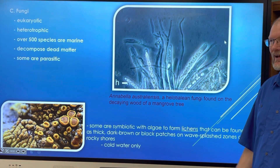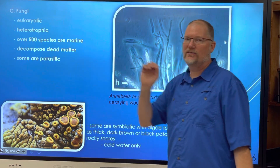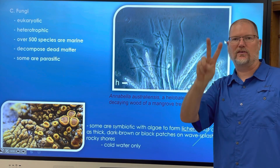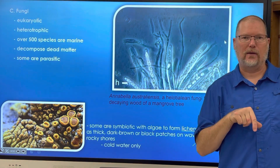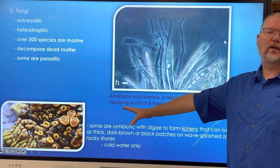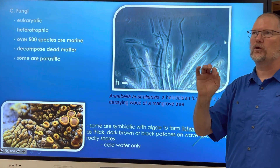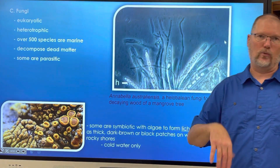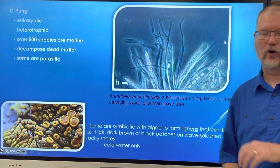Some fungi are symbiotic with algae — not parasitic, symbiotic. Remember that symbiosis can take the form of mutualism, commensalism, or parasitism. Lichens are formed when fungus makes a relationship with algae — you can see lichens on campus, growing on oak trees or rocks on rocky shores. That's cold water only; we have terrestrial lichens, but not marine lichens here in Florida.